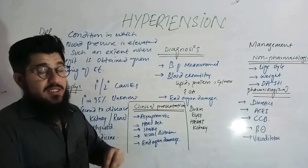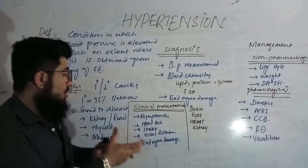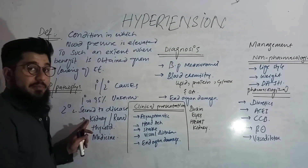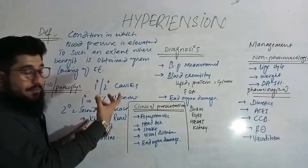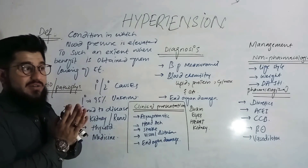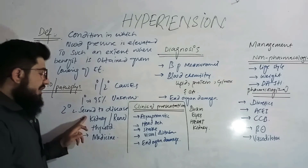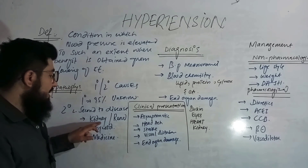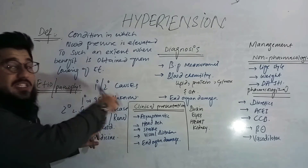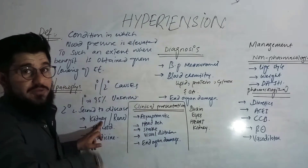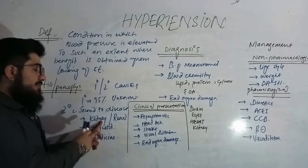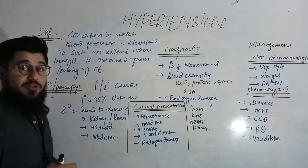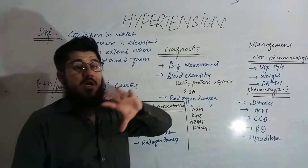In secondary hypertension, there is a known disease behind the condition. Causes include kidney problems — you can search our RAS system video for the pathophysiology explanation — thyroid problems, both hyperthyroidism and hypothyroidism, and certain medicines that can also lead to hypertension.